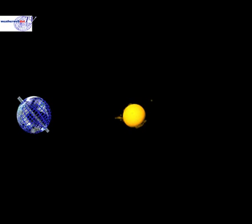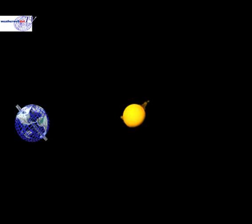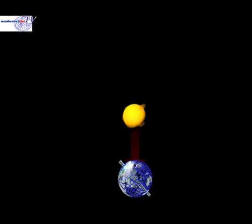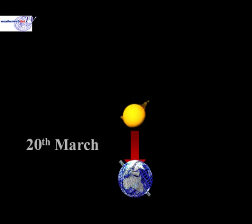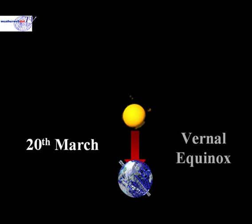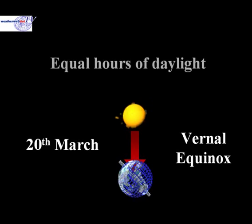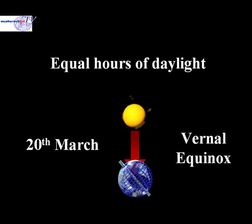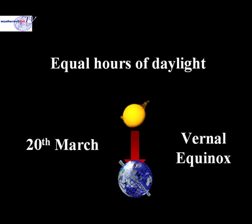Let's move on by three months and see what happens next. Now the Sun is shining directly over the equator. This is the period around the 20th of March — it's what we call the vernal equinox. It's at this time that we have equal hours of daylight in both the Northern and Southern Hemispheres. The Northern Hemisphere is coming out of winter and heading towards summer, while the Southern Hemisphere is coming out of summer and heading towards winter.